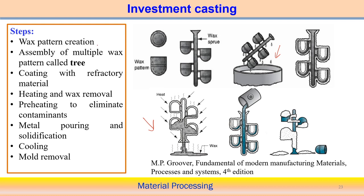The steps are: wax pattern created, then assembly of multiple patterns into a 'tree', then coating with refractory material, followed by heating to remove the wax and treat the coating. Preheating is also followed to eliminate contaminants. Once done, liquid metal is poured and allowed to solidify. After cooling, the coating is removed to get the cast component. These are the steps of the investment casting operation.